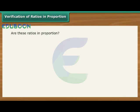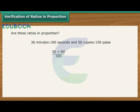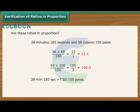Consider two more ratios: 36 minutes is to 180 seconds and Rs. 50 is to 150 paise. Converting units: 36 minutes divided by 180 seconds equals 36 into 60 seconds divided by 180 seconds, which is equal to 12 is to 1. Rs. 50 divided by 150 paise equals 5000 paise divided by 150 paise, which is equal to 100 is to 3. Since 12 is to 1 is not equal to 100 is to 3, the ratios are not in proportion.